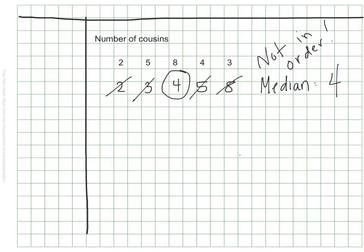The median of four means that half of the students have either four or more cousins, and half of the students have four or fewer cousins.